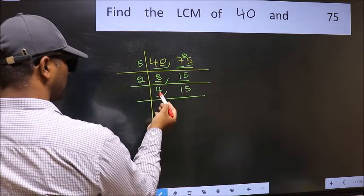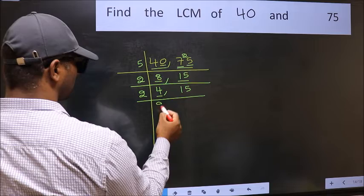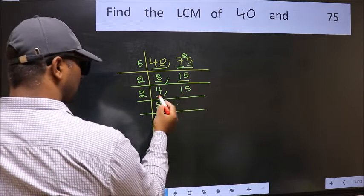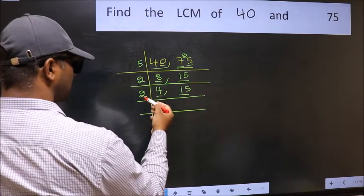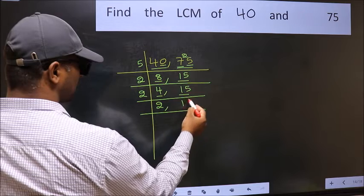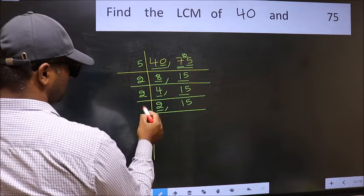Now here we have 4. 2 times 2 is 4. The other number is 15 — not divisible by 2, so you write it down as it is.